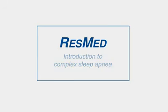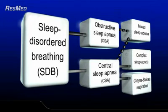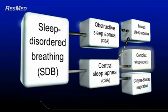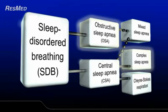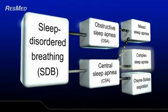What is complex sleep apnea? Sleep Disordered Breathing, or SDB, is an umbrella term for several conditions that together affect millions of people. SDB can be subdivided into two categories which describe the cause of the problem: obstructive and central. Complex sleep apnea is a recently described form of SDB that has features of both obstructive sleep apnea and central sleep apnea. This video focuses on the characteristics, detection, and treatment of complex sleep apnea.